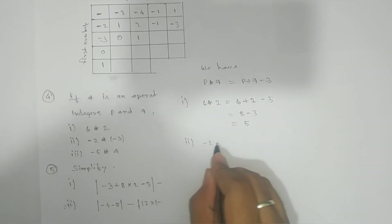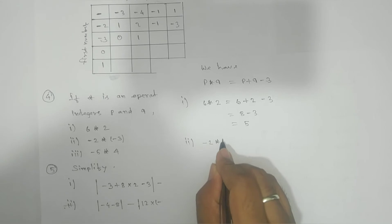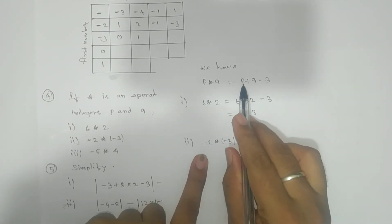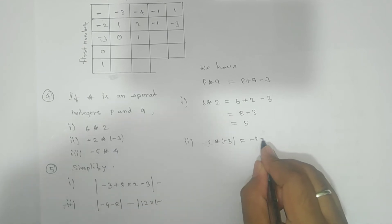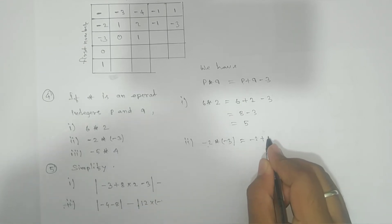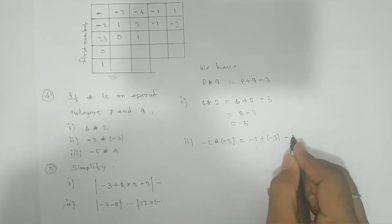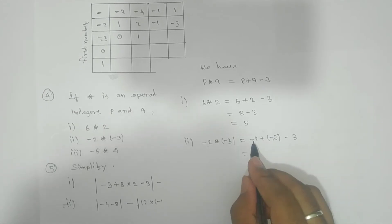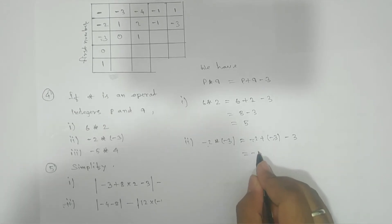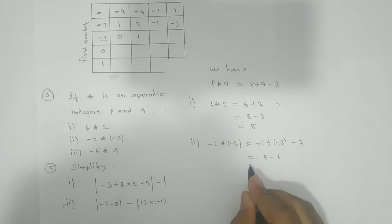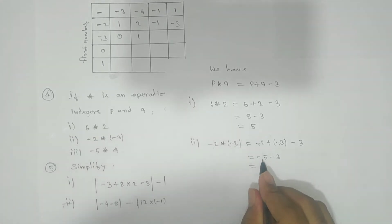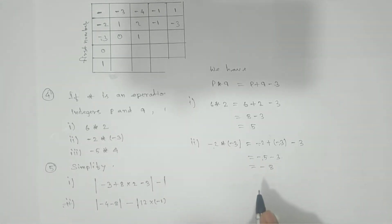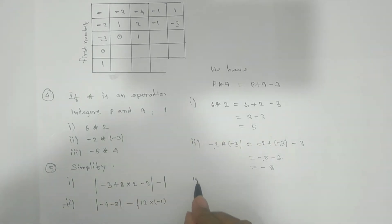Next: minus 2 ★ minus 3. Here p is minus 2, so we write minus 2 plus minus 3, which gives minus 5, and then minus 3 again gives minus 5 minus 3, which equals minus 8.